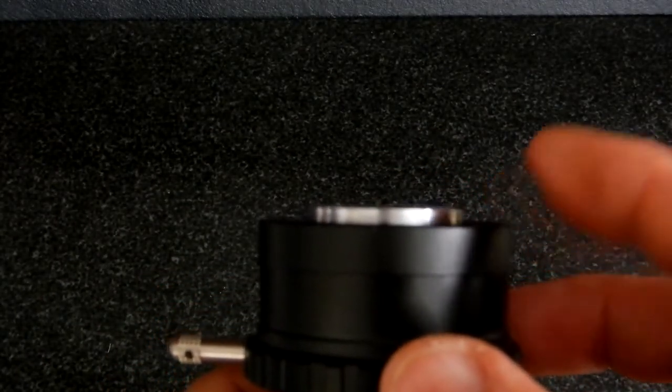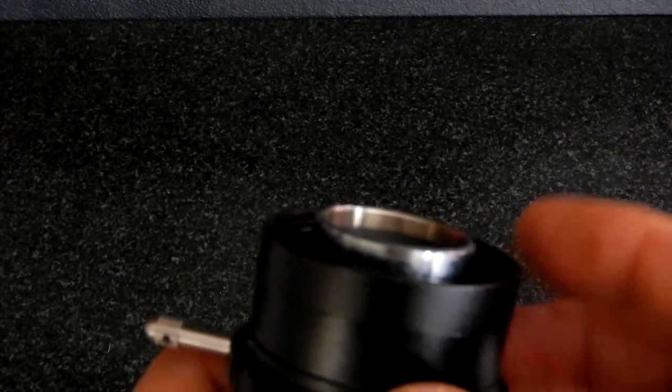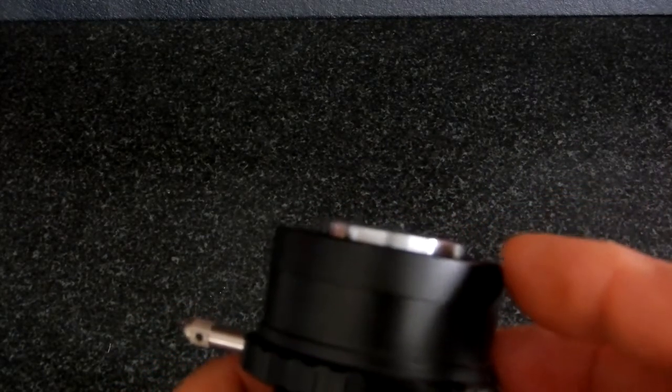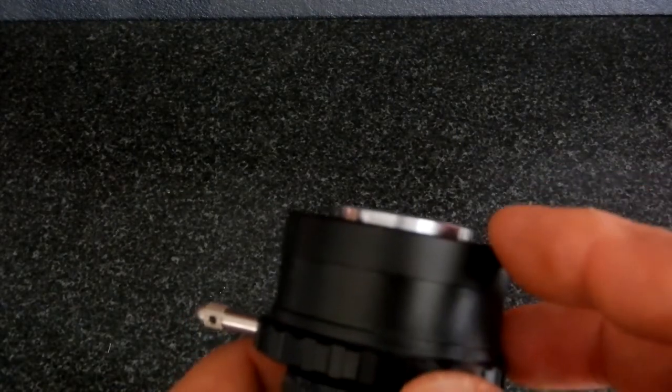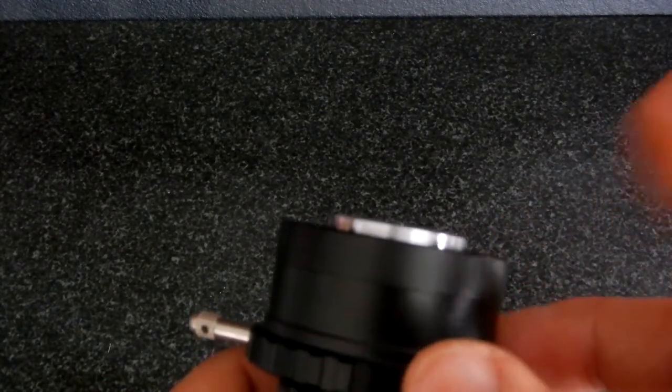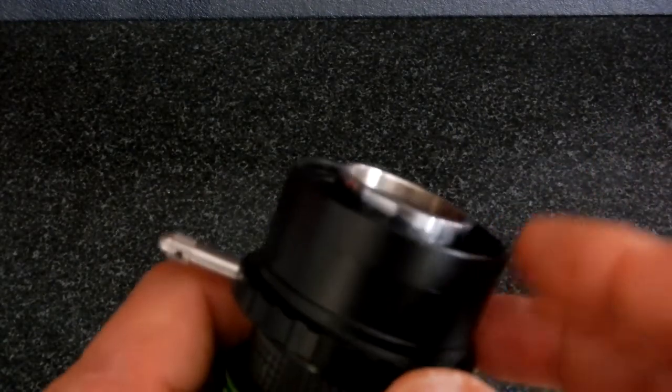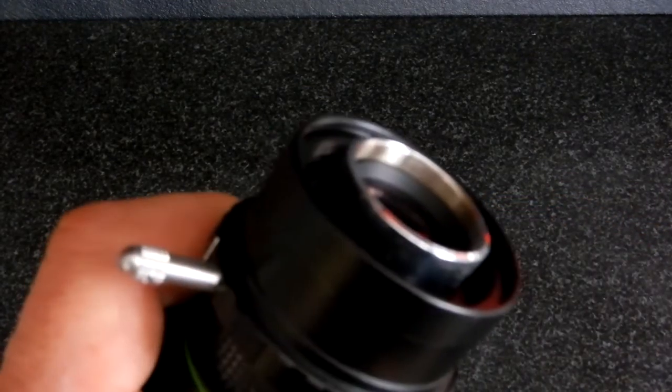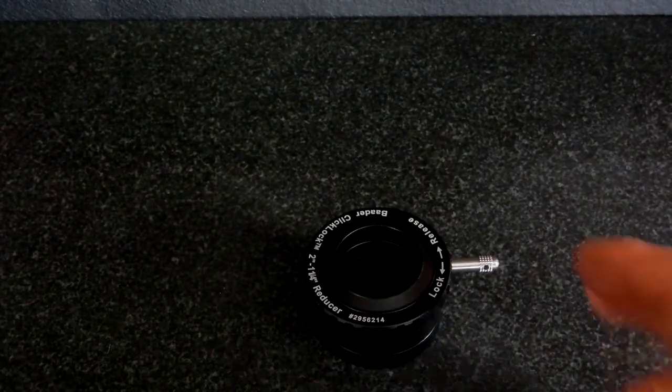Another thing to remember is if you are putting filters in here, you want to make sure that the eyepiece doesn't protrude past it. A lot of the time, most of the time with eyepieces, I'm always using a diagonal and I will put the filter in the entrance of the diagonal, so you won't have that problem. Just remember to make sure this doesn't happen.